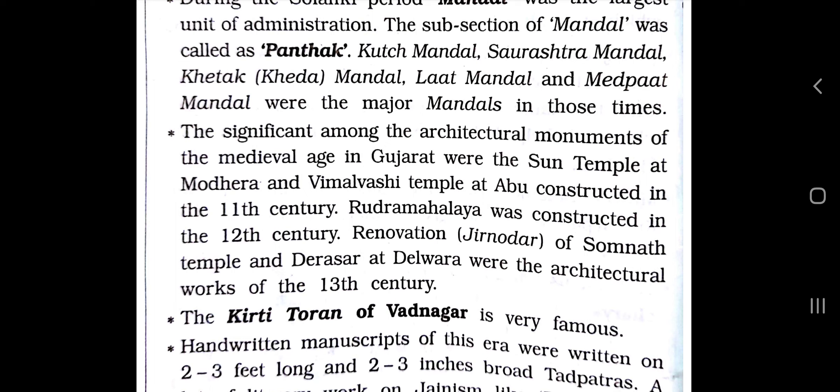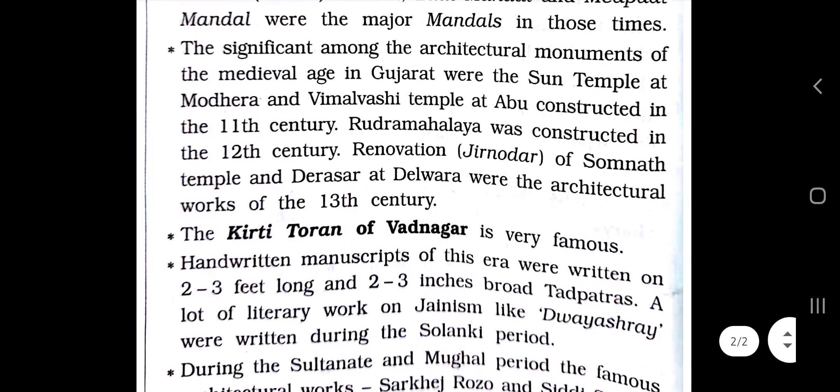Among the significant architectural monuments of the medieval age in Gujarat were the Sun Temple in Modhera and Vimla Vasahi Temple at Abu, constructed in the 11th century. Rudra Mahalaya was constructed in the 12th century. Renovation (Jirnoddhar) of Somnath Temple, Dilwara temples, and the Kirti Toron of Vadnagar were the architectural works of the 13th century. The Kirti Toron of Vadnagar is very famous for its splendid architectural work.